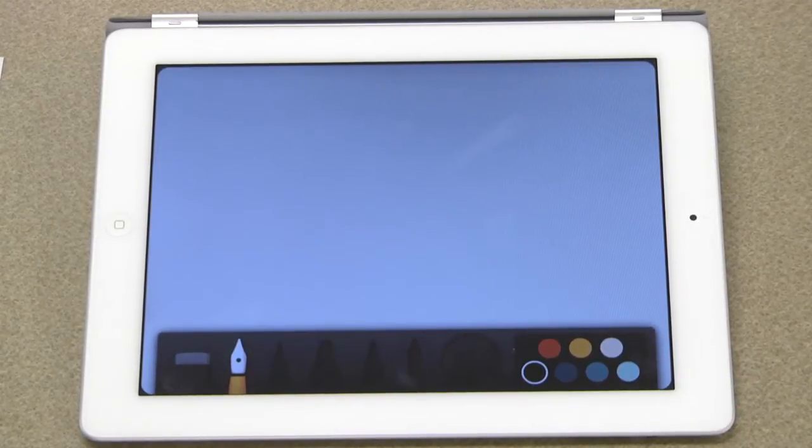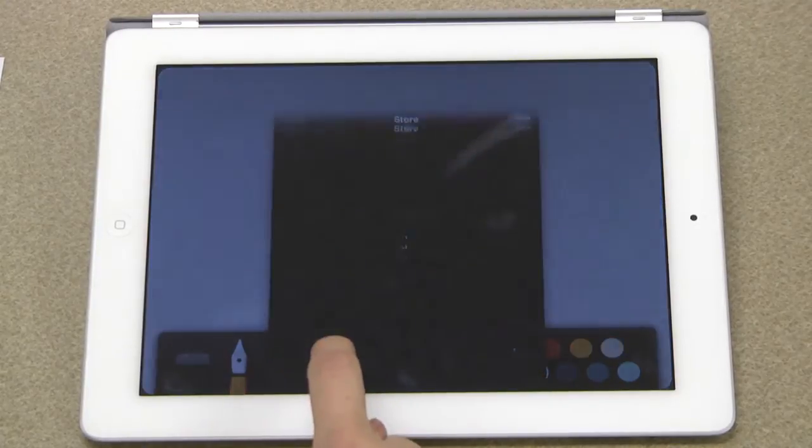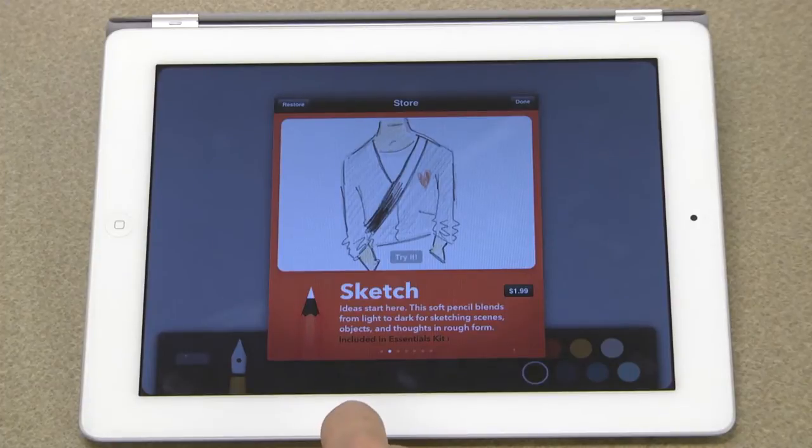The only free drawing tools that come with the Paper 53 app are the calligraphy pen and the eraser. You can tap the empty slots and demo the other writing tools in the color mixing palette, which are available as in-app purchases.